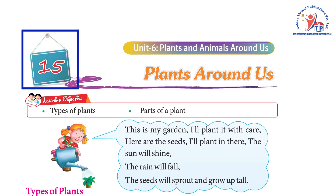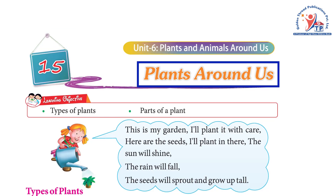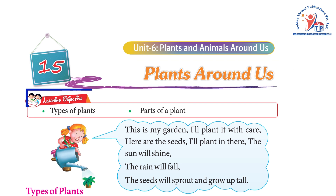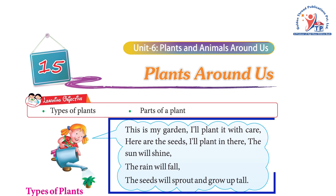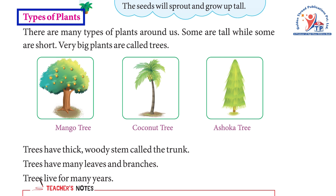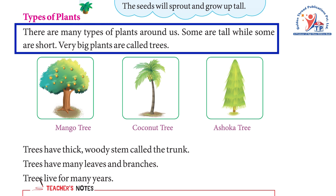Chapter 15: Plants Around Us. Learning objectives: types of plants, parts of a plant. This is my garden, I'll plant it with care. Here are the seeds I'll plant in there. The sun will shine, the rain will fall, the seeds will sprout and grow up tall. Types of plants: there are many types of plants around us, some are tall while some are short.